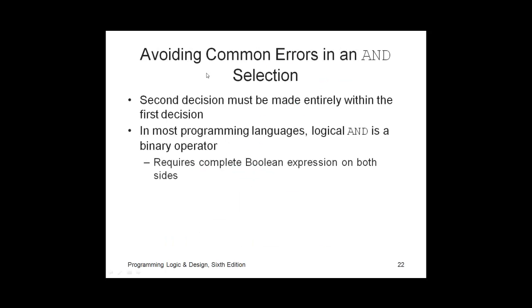Some common errors in AND selection. The second decision must be made entirely within the first decision, again, if we're nesting. In most programming languages, a logical AND is a binary operator. In other words, it's going to evaluate to true or false.